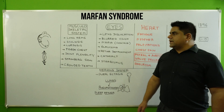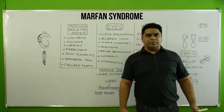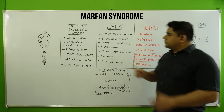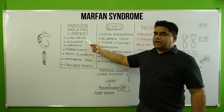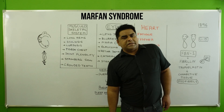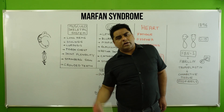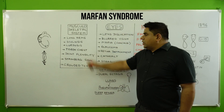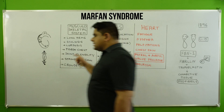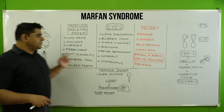Under the musculoskeletal system, patients show long arms. Later I will tell you some celebrities who have Marfan syndrome — you will be very surprised. These individuals have long arms, then scoliosis, abnormal clavicle bone structure or asymmetry of the clavicle bone, lordosis, a hump-like structure, and pigeon chest, as you can see on my right side.